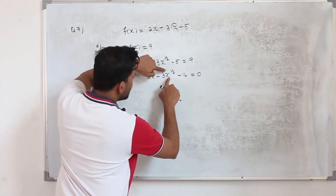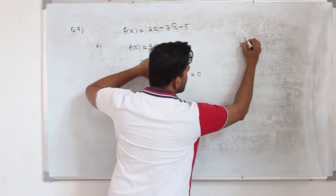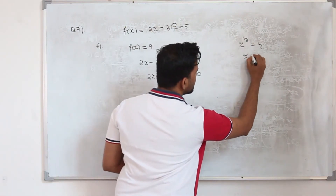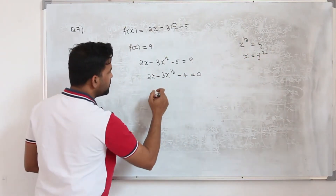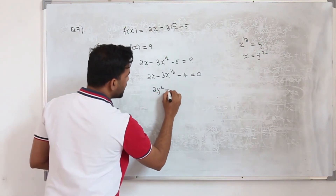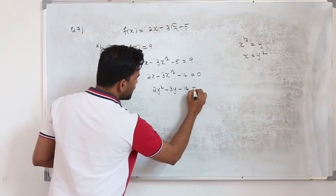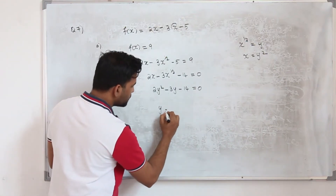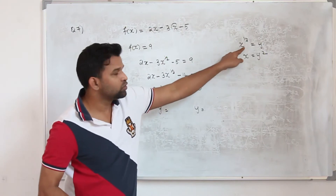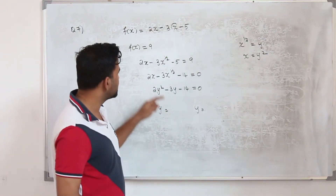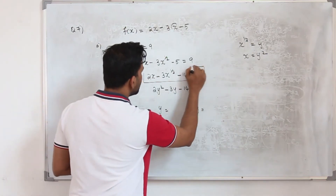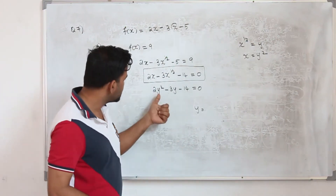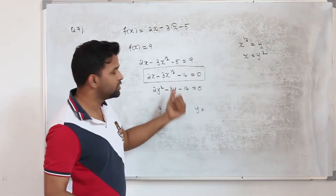To convert to a quadratic, let y equal x^(1/2). Then x equals y². Substituting gives 2y² minus 3y minus 14 equals 0, which is now a standard quadratic equation. Solve for y, then replace y by x^(1/2) and solve for x. Whenever you come across this type of question, convert to a quadratic first, solve for y, then substitute back.